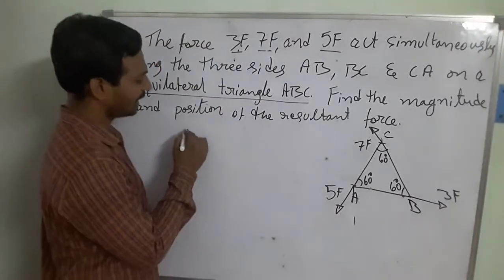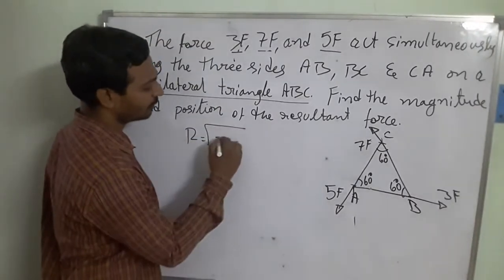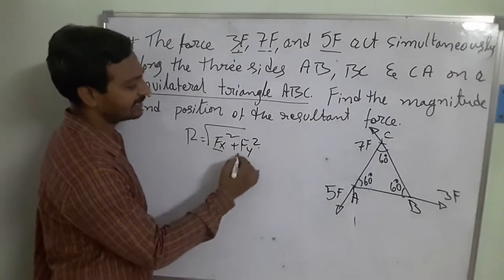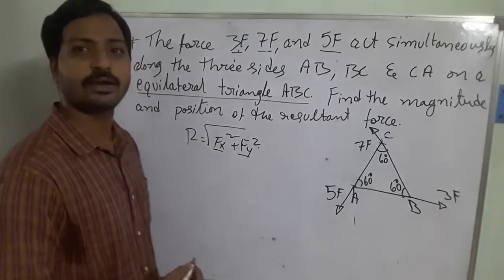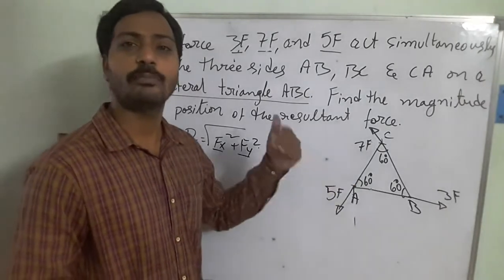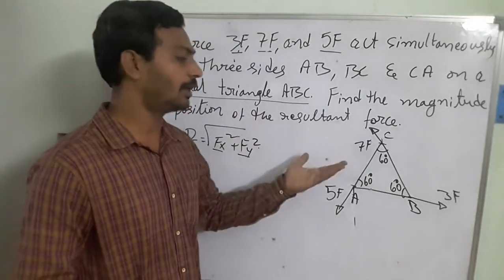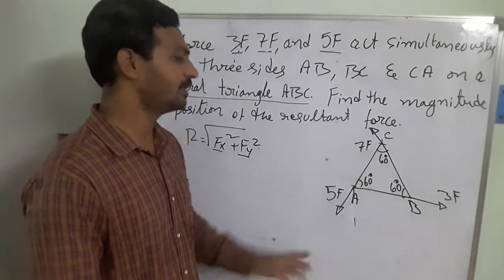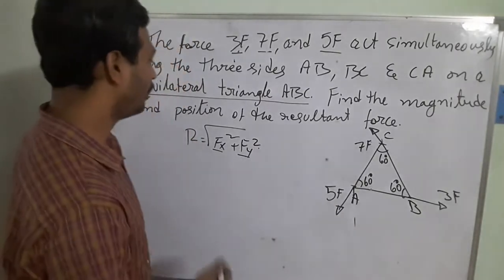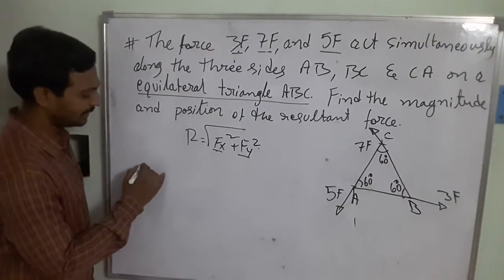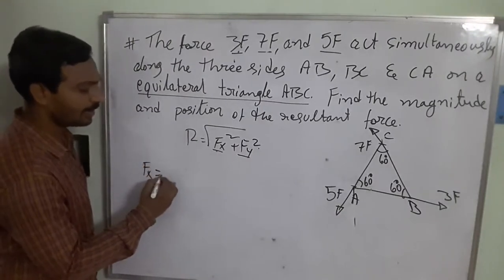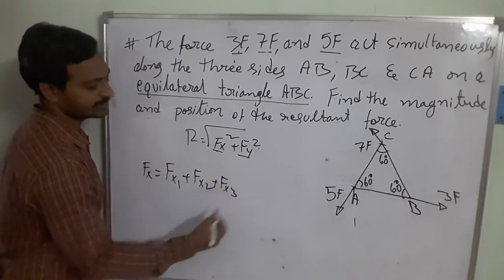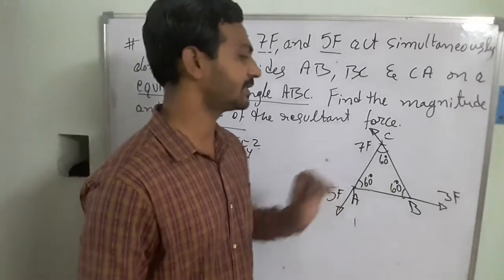The resultant component is R = √(Fx² + Fy²). To calculate Fx and Fy, we resolve each individual force into horizontal and vertical components, then sum them all up. So Fx = Fx1 + Fx2 + Fx3, since we have three forces.